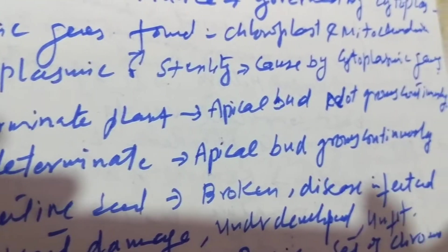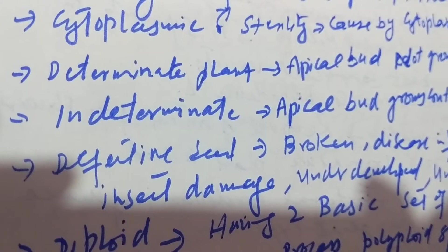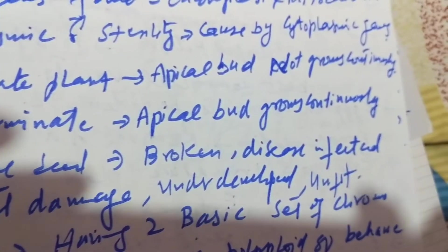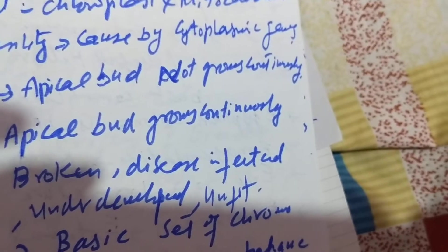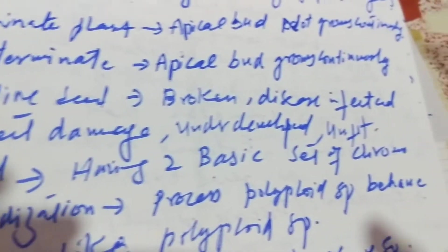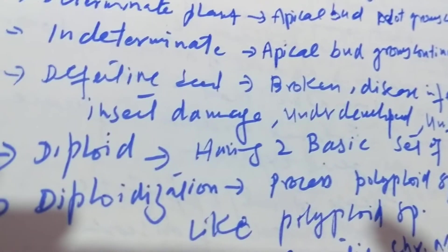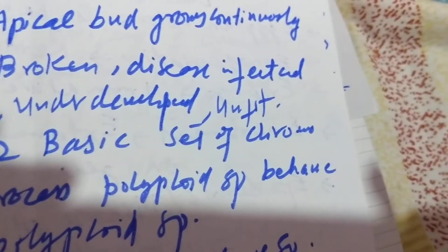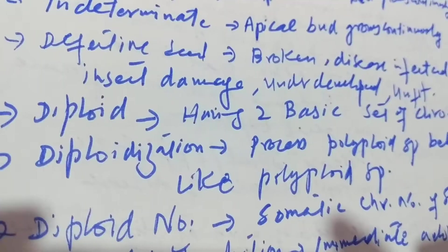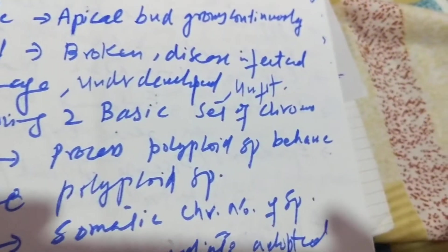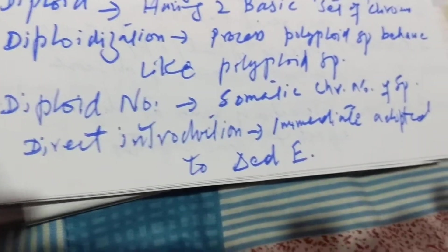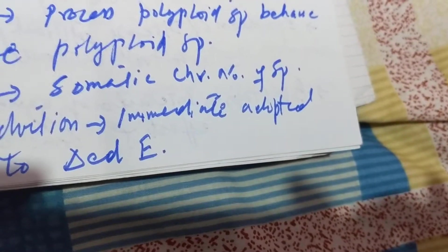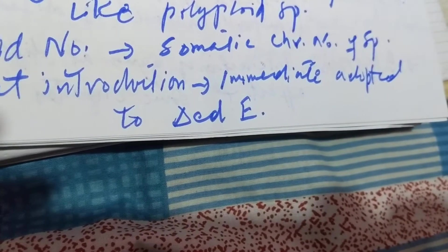Determinate plants are those where apical buds do not grow continuously, whereas indeterminate plants are those where apical buds grow continuously. Defective seed is broken, disease-infected, insect-damaged, underdeveloped, or unfit to germinate. Diploid means having two basic sets of chromosomes.